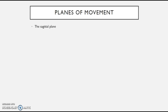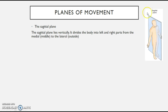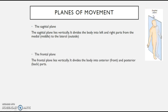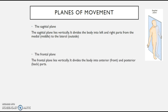Looking at the sagittal plane: it lies vertically, dividing the body into left and right parts. If you have a look here, you've got left and right — imagine a sheet of glass coming straight down through your body. That's the sagittal plane, allowing you to see what is left and right.